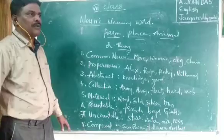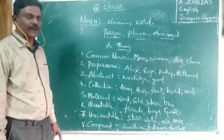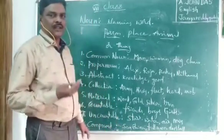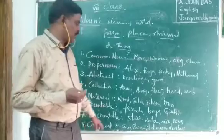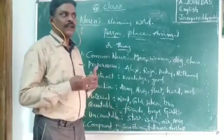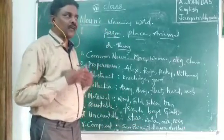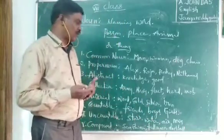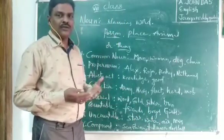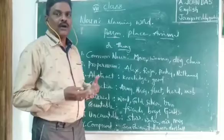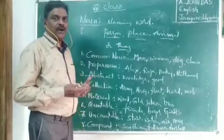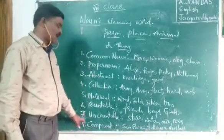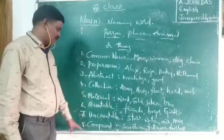Uncountable noun means which cannot be counted. For example, stars — how many stars are there, we cannot count. Water — how much water is there in the world, we cannot count. Air, news, paper — how much is there, we cannot count. These are all called uncountable nouns.